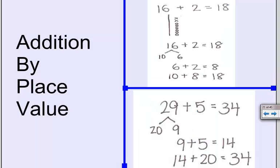So the strategy we're going to study today is called addition by place value. It's really just taking ones with ones and tens with tens. So when I have 16 plus 2, I know that means I have one ten and six ones.